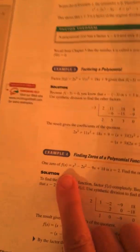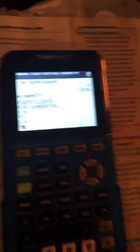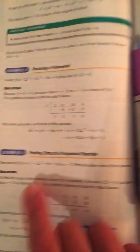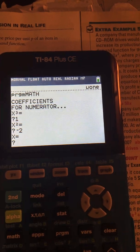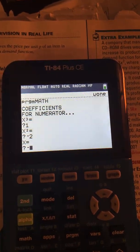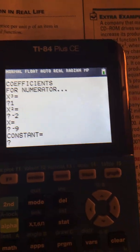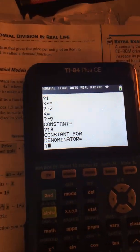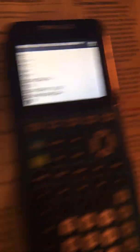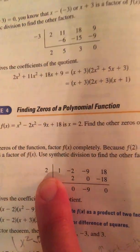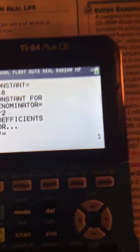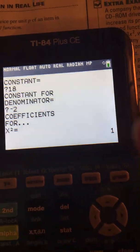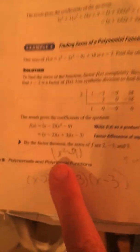And it wants the coefficient for X cubed. And that's one. An understood one. X squared is negative two. X is negative nine. And the constant, or the bare number, is 18. And then it said, what is the constant for the denominator? It's the opposite sign of this. So it's negative two.